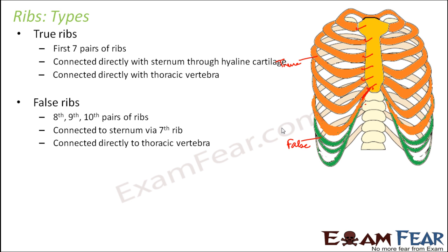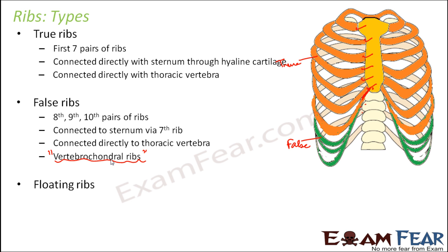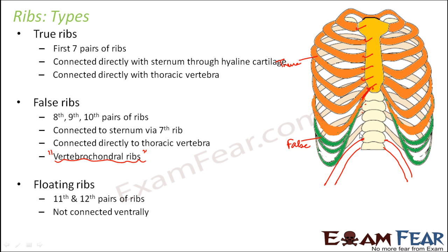The false ribs are connected directly to the thoracic vertebrae at the back, so they are also known as vertebrochondral ribs. The last two ribs — the 11th and 12th pairs — are called floating ribs because they are connected to the vertebral column at the back side but are not connected to the sternum on the ventral side at all.